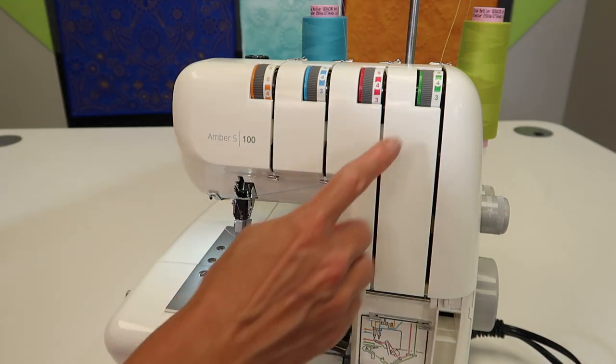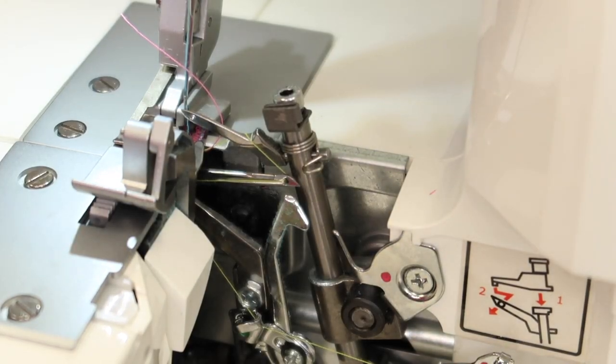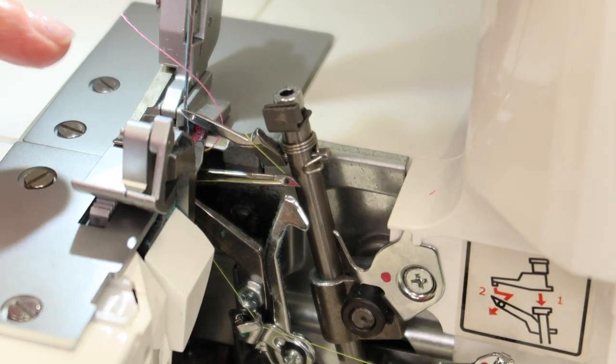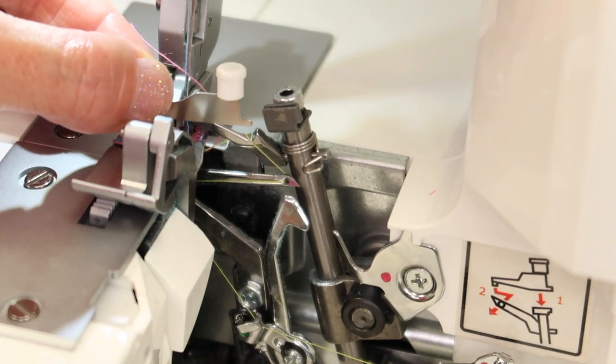We still have to make the machine pretend that it has thread in this upper looper. The two-thread converter is going to do just that. The little knob is going to be on top.